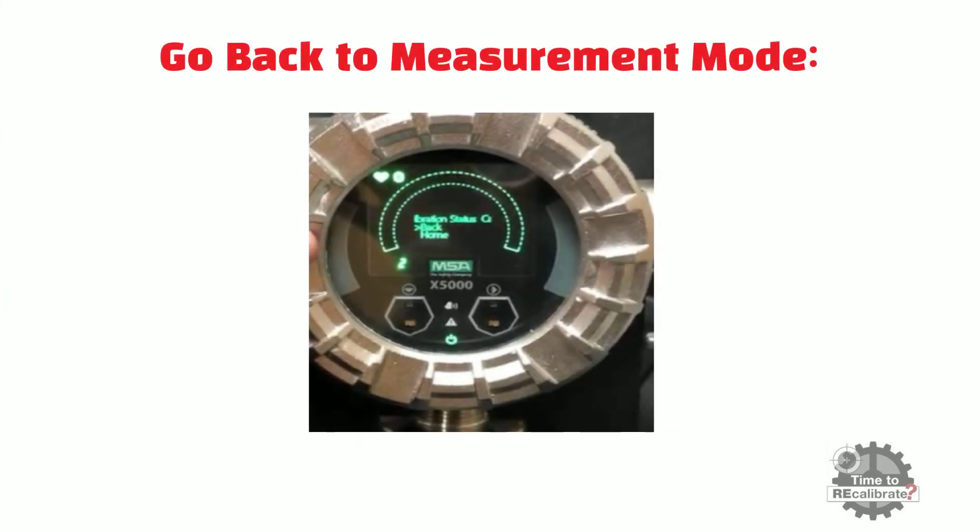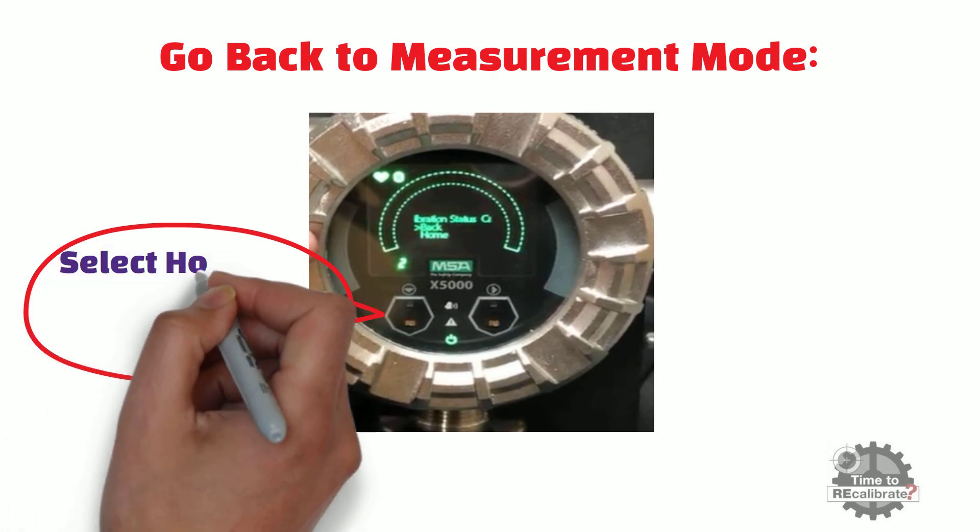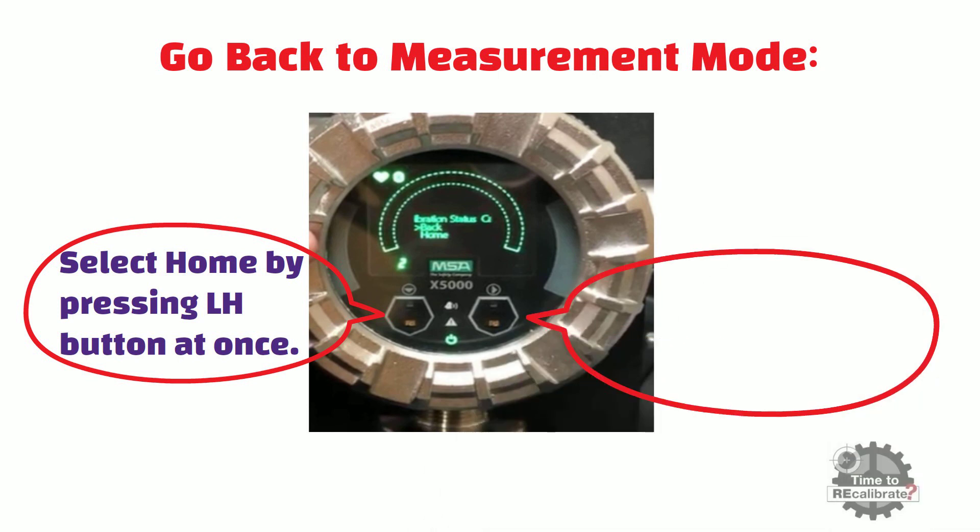Now, zero and span calibration is done. So, select the home option by pressing the left hand side button once, and then press the right hand side button to go back to measurement mode.